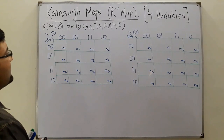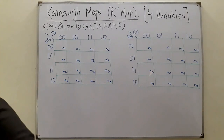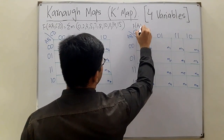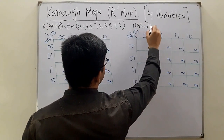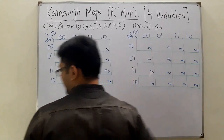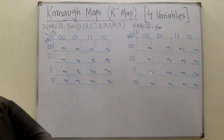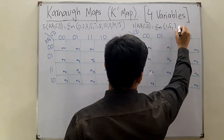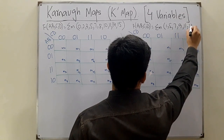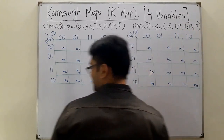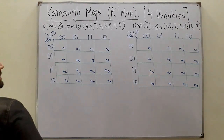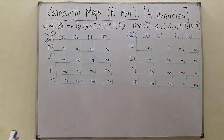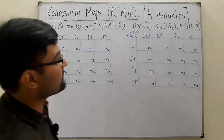The second question: F(A, B, C, D) = summation of minterms 1, 5, 7, 9, 11, 13, 15. Pause the video, solve both problems, and then check your answers.